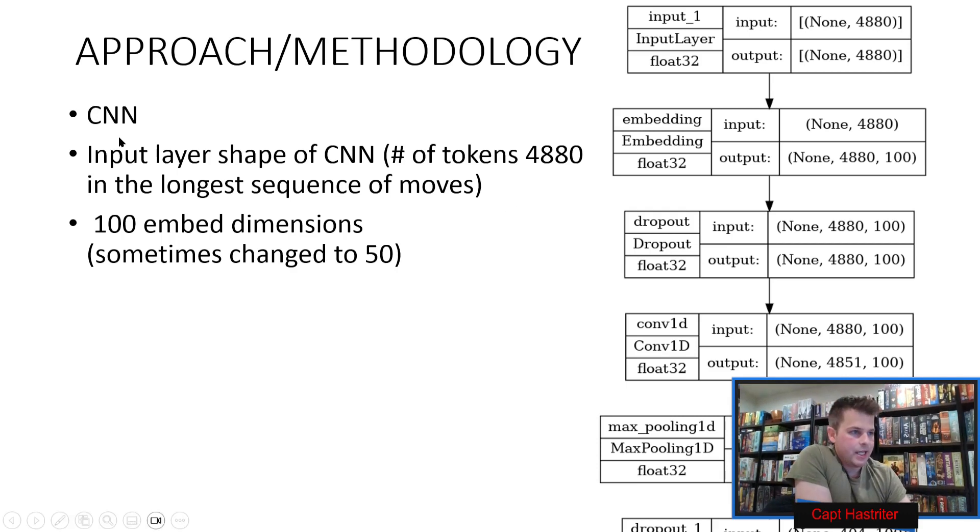With the CNN, we took those 1,000 games and had a highest token size of 4,880 games. Any other games, we padded out and then we went through different layers. You had an embedding layer that gave meaning to these tokens. The dropout layer would randomly drop out different nodes so that we wouldn't rely on certain ones too much and would prevent overfitting.